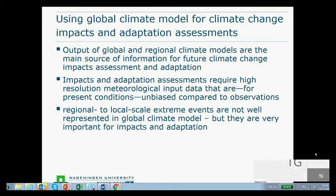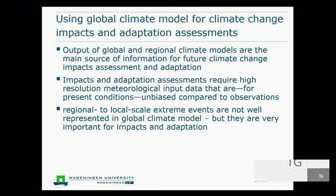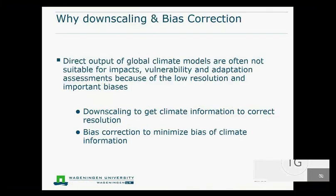Because of these issues, we do use bias corrections and downscaling methods. To summarize: the direct output of global climate models is often not suitable for impacts, vulnerability, and adaptation assessments because of low resolution and important biases. We use downscaling to get climate information to the correct resolution — this can mean a smaller grid, or downscaling to a particular weather station where good historic data is available. Bias correction minimizes the bias of the climate information.